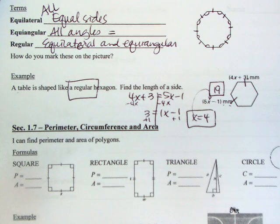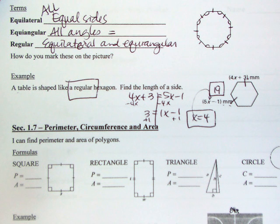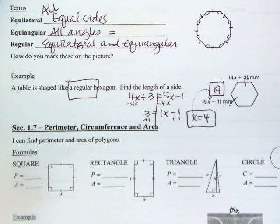A lot of the stuff you're going to be doing today is just reading the vocab. You're going to decide if things are equal — if a shape has equal sides or equal angles — and then you'll be able to set up a problem. Lots of stuff is just going to be equal to each other today.